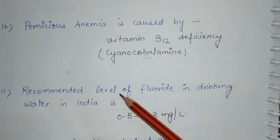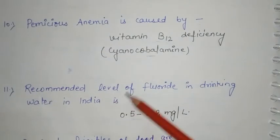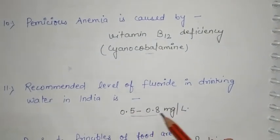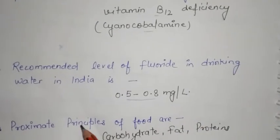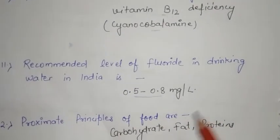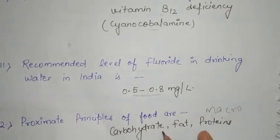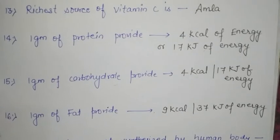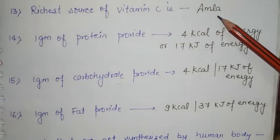Recommended level of fluoride in drinking water in India is 0.5 to 0.8 mg per litre. Proximate principles of food are the macronutrients — they include carbohydrates, fats, and proteins. The richest source of vitamin C is amla.